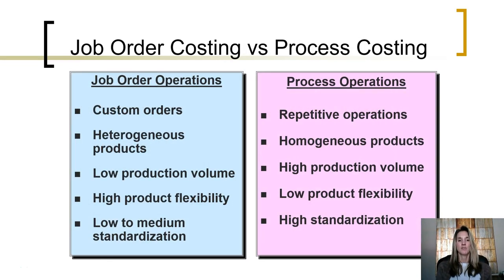This is different from a job order cost system. In a job order cost system, costs are traced directly to a job. That works well if orders are custom made and heterogeneous — we can differentiate one from another. There's a low volume of production, a lot of flexibility in each unit, and not a lot of standardization.